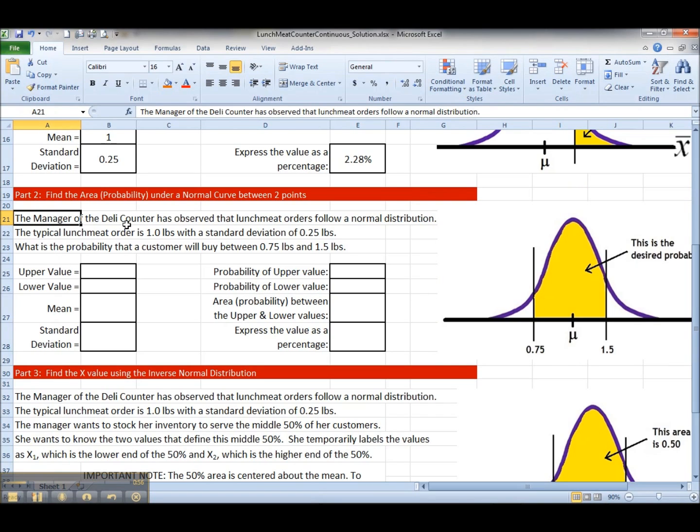Our problem is very similar to the first one. It says the manager of the deli counter has observed that lunch meat orders follow a normal distribution. Once again, the typical lunch meat order is one pound, and remember we said this is mu and you would label that as one pound with a standard deviation of 0.25 pounds. Now the question this time is a little different and it says what is the probability that a customer will buy between 0.75 pounds and 1.5 pounds. Now I did go ahead and label those on the diagram for you.